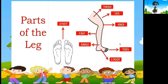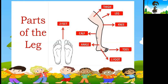Now let us move to the parts of our leg. We start with the thigh, then the knee, and then we have the ankle. And then our toes — one, two, three, four, five toes for one foot, so ten toes for two feet. One foot, two feet. This muscle here is called the calf. Those are the parts of the leg.